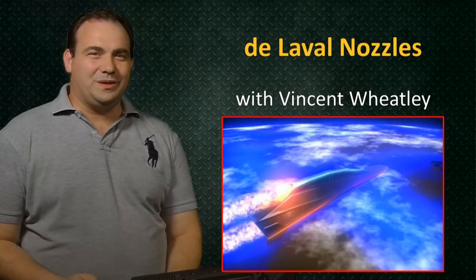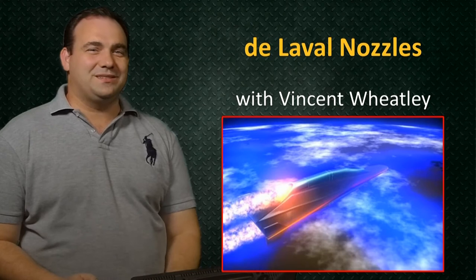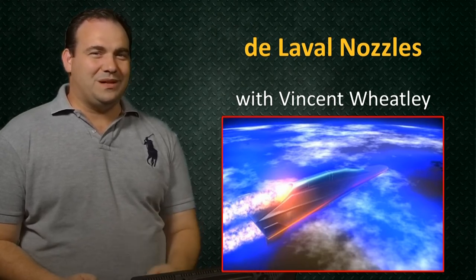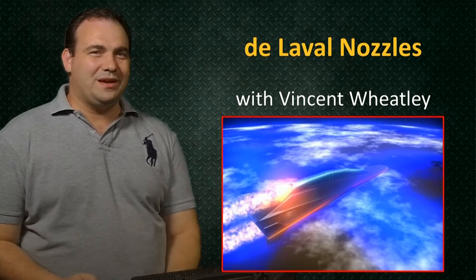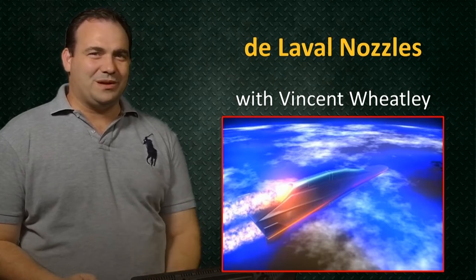In the last unit, we learned that subsonic and supersonic flows have the opposite reactions to changes in area. For example, a converging nozzle accelerates a subsonic flow but decelerates a supersonic one.